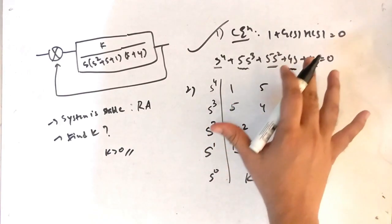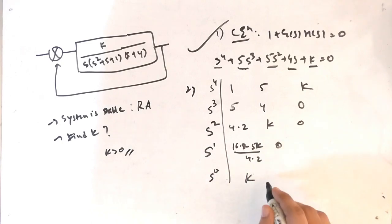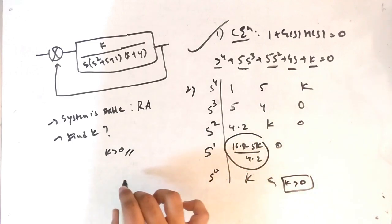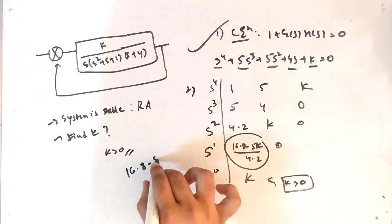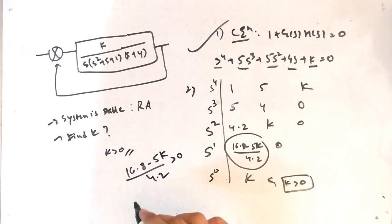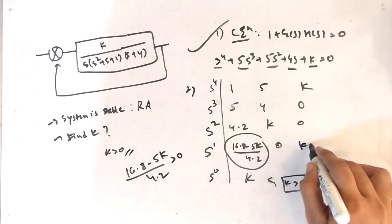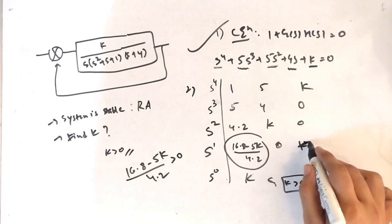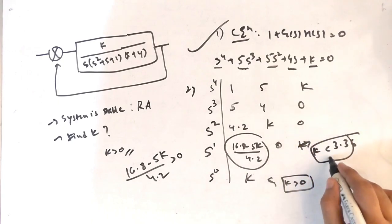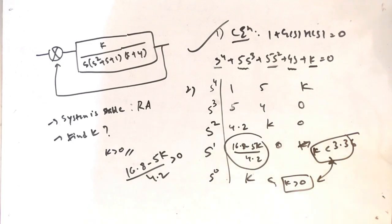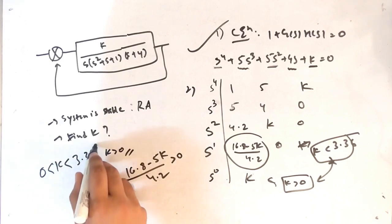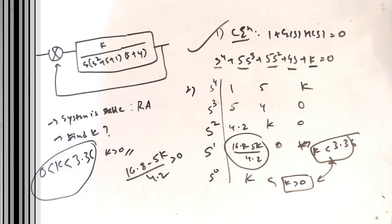Now from the Routh array you can get the value of k. Since k must be greater than 0, and (16.8 − 5k) / 4.2 must also be greater than 0, rearranging gives k less than 3.36. Therefore the range of k is: k is greater than 0 but less than 3.36.